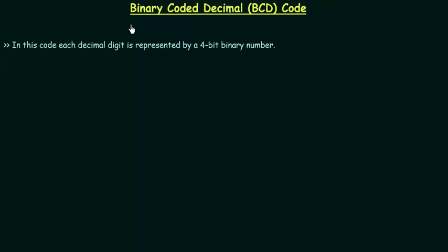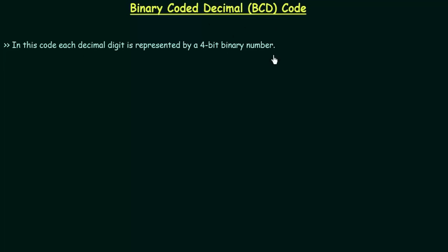In this lecture we are going to learn binary coded decimal. In short it is called as BCD code, where B stands for binary, C stands for coded, and D stands for decimal. In this code, each decimal digit is represented by a four-bit binary number.